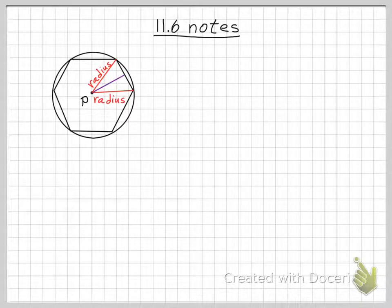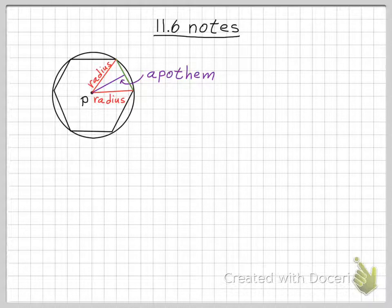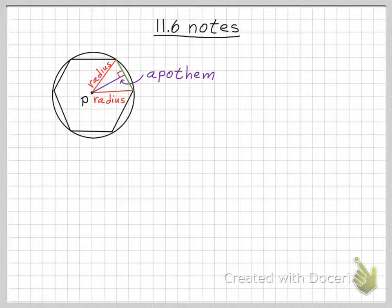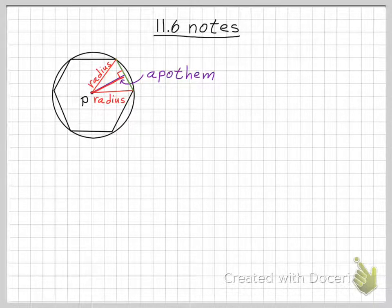And then we have this purple line segment — it's a very important line segment. It's a new word you've probably never heard before. It is called the apothem. The apothem is defined as the distance from the center of the polygon perpendicular to the side. It divides the side in half because this is a regular polygon. The apothem is part of the formula for finding the area of a polygon, so you need to know what it is.